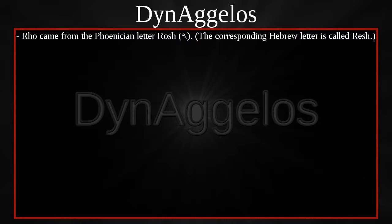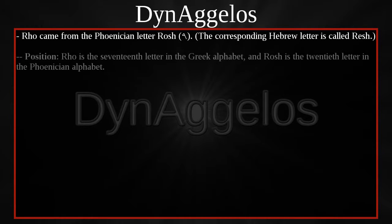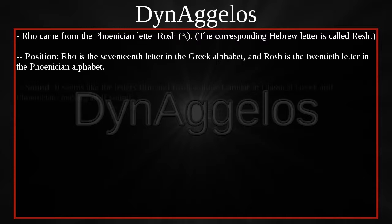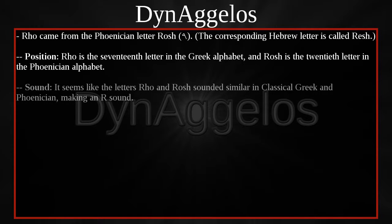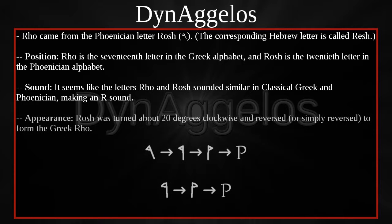RO came from the Phoenician letter ROSH. The corresponding Hebrew letter is called RASH. RO is the 17th letter in the Greek alphabet, and ROSH is the 20th letter in the Phoenician alphabet. It seems like the letters RO and ROSH sounded similar in classical Greek and Phoenician, making an R sound. RO was turned about 20 degrees clockwise and reversed, or simply reversed, to form the Greek RO.